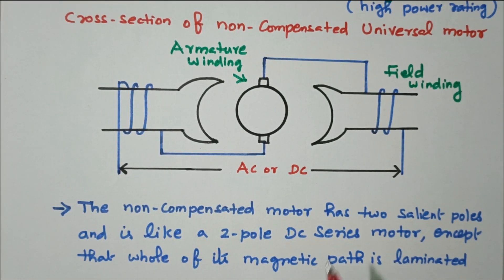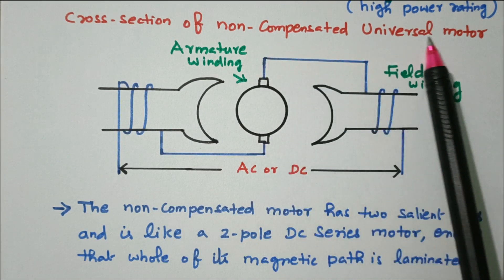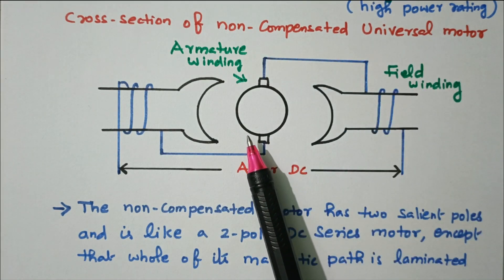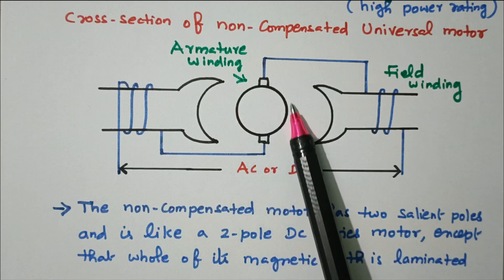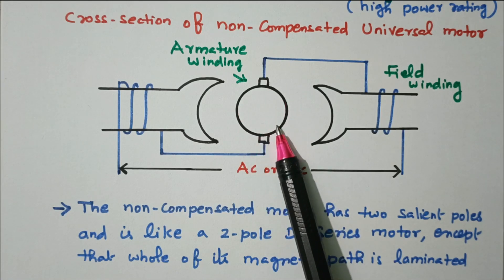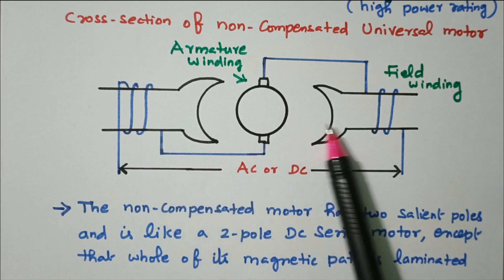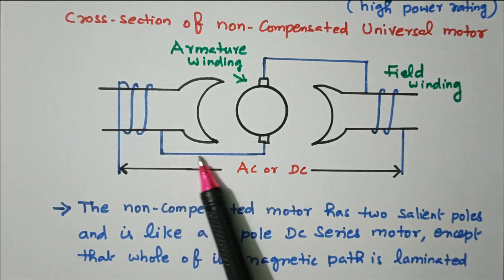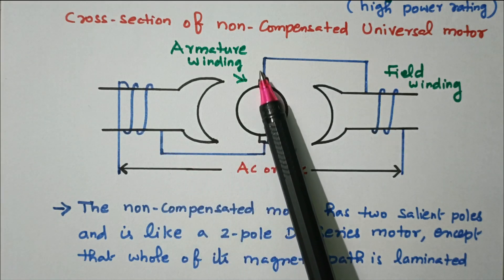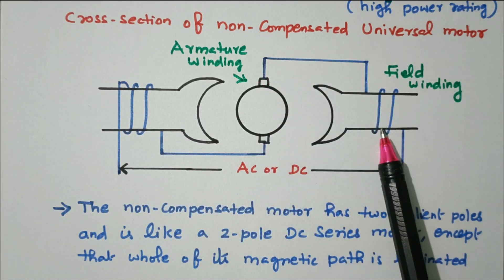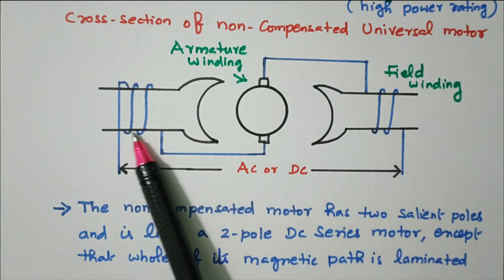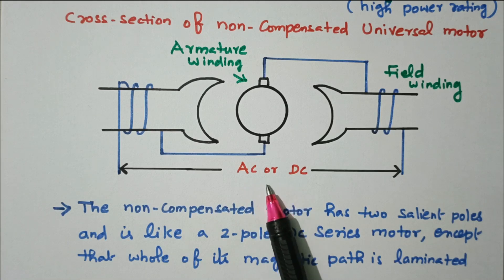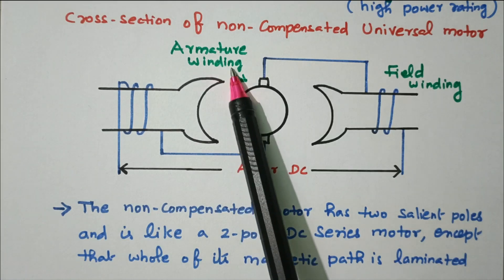First we'll see the non-compensated universal motor. The cross section of the non-compensated universal motor looks like a DC series motor or AC series motor. There are brushes, a field winding, and two poles. The winding is on the first pole, then goes to the armature, then to the next pole — so it's a series motor with field and armature connected in series.